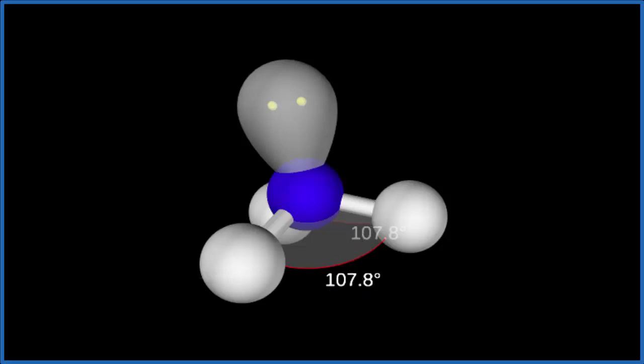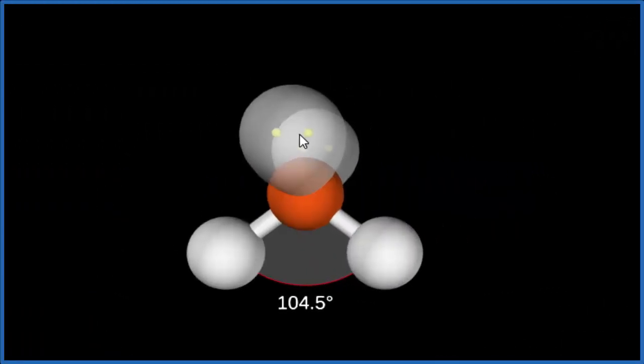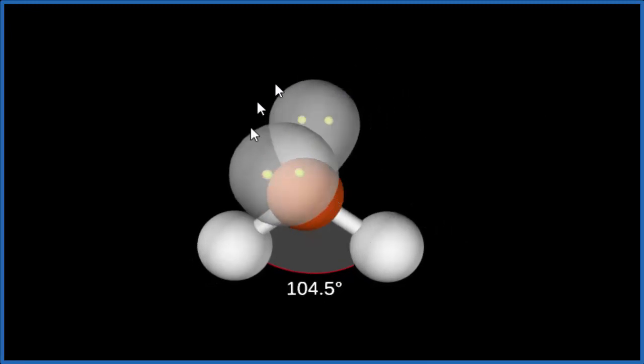If we think about water, we have two lone pairs. What happens with two lone pairs? Here's our water. We can see that these two lone pairs take up quite a bit of space. They're forcing the hydrogen atoms down, and they're closer together. Now we have a bond angle for H2O of 104.5 degrees.